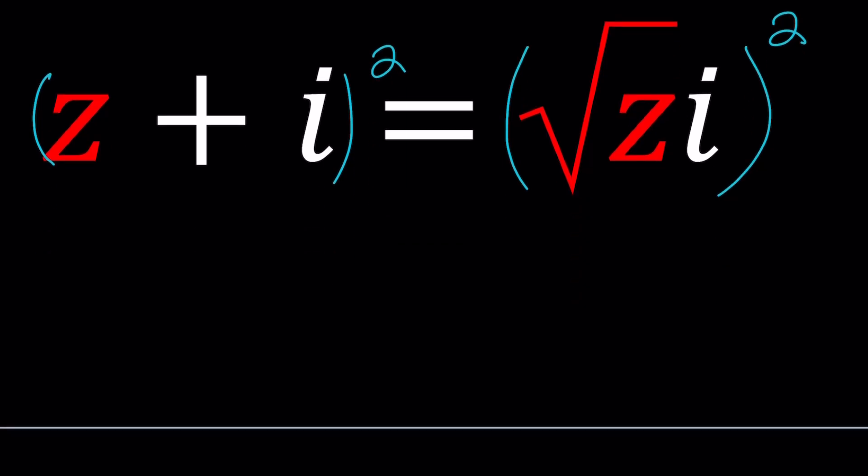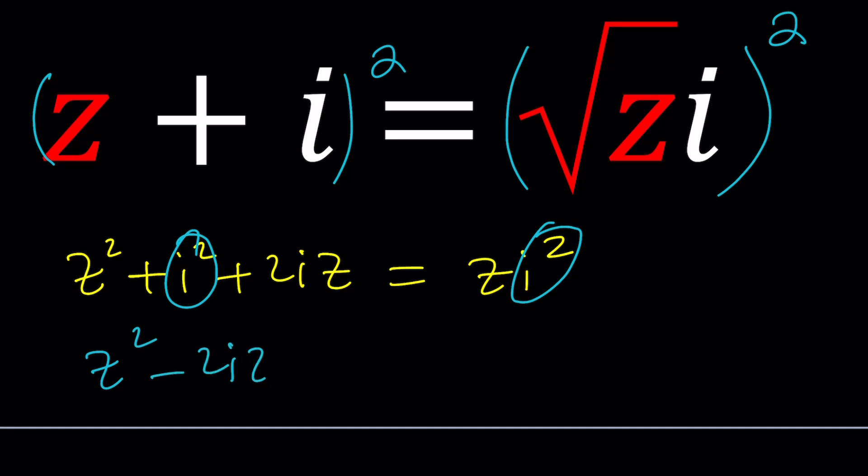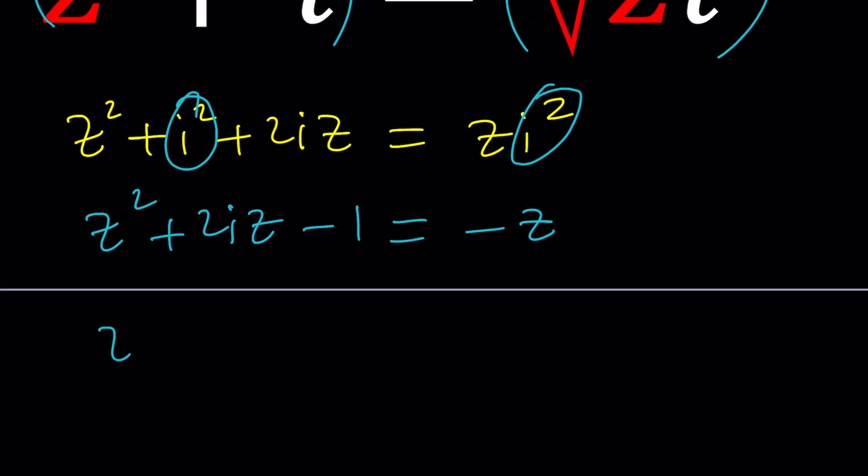This is a sum so you get z squared plus i squared plus 2iz, and on the right hand side you get zi squared. Remember one thing you should never forget: i squared equals negative 1. So this gives you z squared plus 2iz minus 1 equals negative z. Let's put everything on the same side: z squared plus z plus 2iz minus 1 equals 0. That's our quadratic.